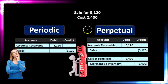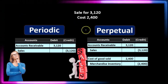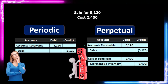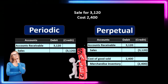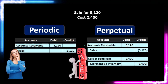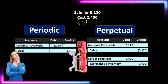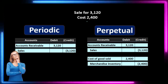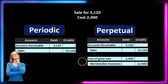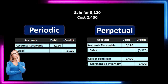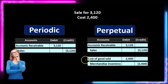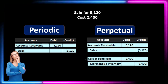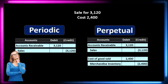Then we have the perpetual system. The perpetual system has the same first journal entry, but also includes the next journal entry dealing with merchandising accounts — merchandise inventory and cost of goods sold. The cost represents the merchandise inventory, which has a debit balance and we make it go down with a credit. The related cost of goods sold is an income statement expense account and goes up with a debit. This is the difference between the two.